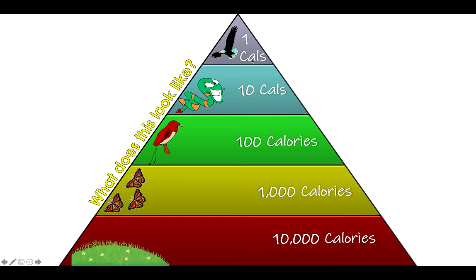Of the original 10,000 calories we started with, how much ends up all the way at our apex predator, the eagle? Only one calorie. I want to correct a common misconception here — I'm not saying an entire bald eagle is one calorie; a stick of gum has more calories than that. What I'm saying is that if we follow this food chain, only one of the original calories found in that patch of grass made it to the eagle. That is fundamentally why we see the world as we see it.